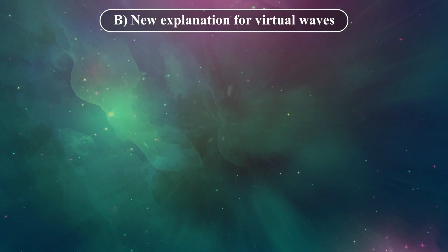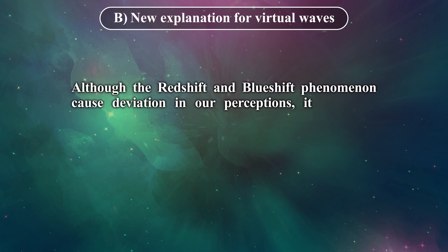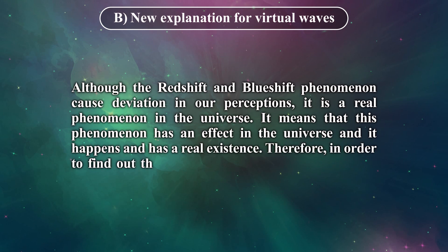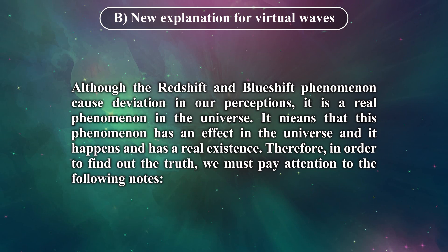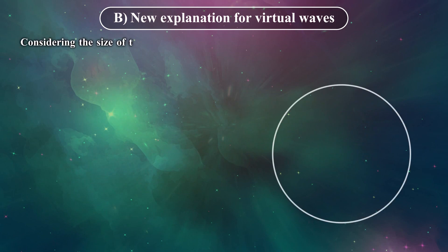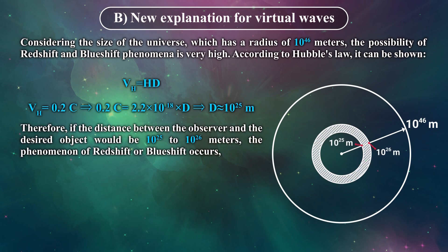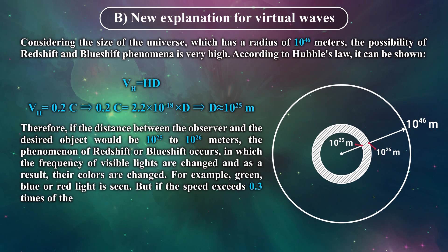Part B: New explanation for virtual waves. Although the redshift and blueshift phenomenon cause a deviation in our perceptions, it is a real phenomenon in the universe. It means that this phenomenon has an effect in the universe and it happens and has a real existence. Therefore, in order to find out the truth, we must pay attention to the following notes. Considering the size of the universe, which has a radius of 10 to the power of 46 meters, the possibility of redshift and blueshift phenomena is very high.